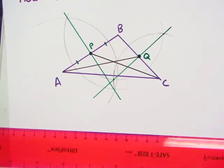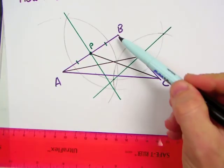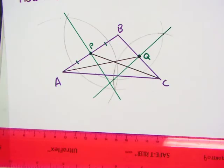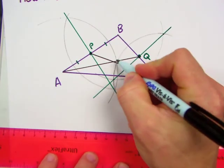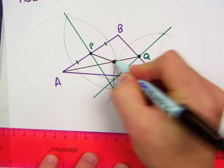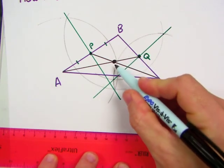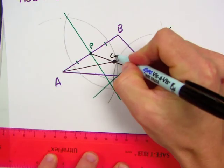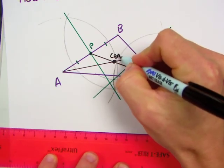Now if you look at this, it's not really necessary to draw the median from point B, because we know all three medians intersect in the same point. So right here, we have the centroid of our triangle.